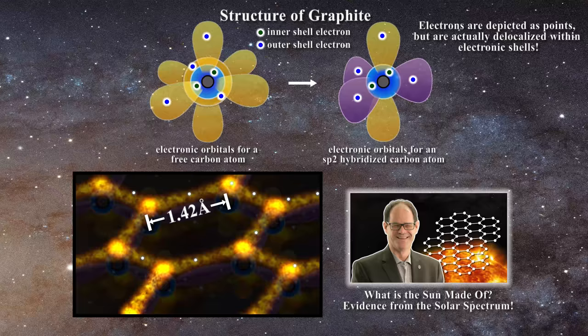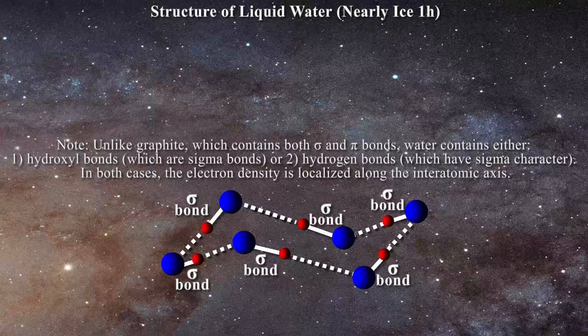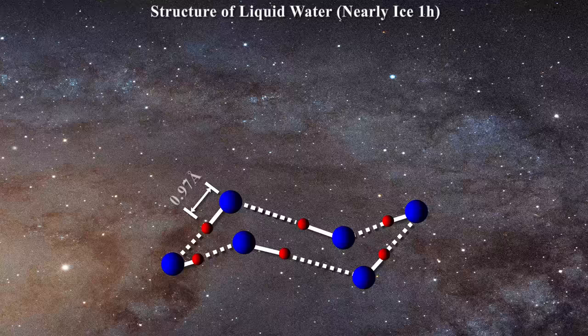Unlike graphite, water only has sigma bonds. It has no pi bonding electrons because the hydrogen atoms which are interspace between the oxygens make the distances too large. The hydroxyl bond length in water is about 0.97 angstroms and the hydrogen bond is about 1.97 angstroms.